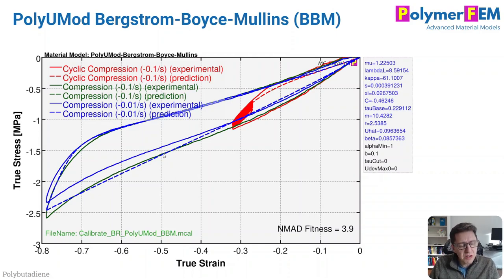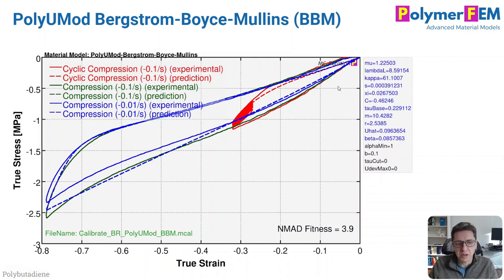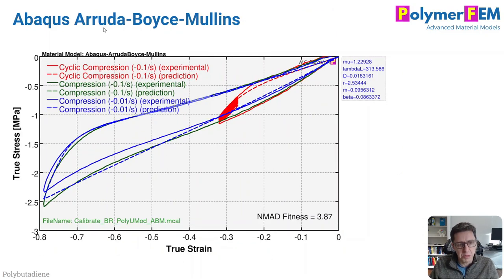But if you look carefully, you'll notice something interesting: in order to get this optimal calibration, the two strain rates — the green and the blue — are completely overlapping. The best fit of this model basically removes the strain rate dependence, because it can't predict the difference in strain rate dependence during compression versus unloading. And if we take this to the extreme and use just a hyperelastic model with Mullins damage and no viscoelasticity at all, we get the same predictive error. So the Bergstrom-Boyce model is powerful, but for this particular case it didn't give any advantage in terms of viscoelastic properties.